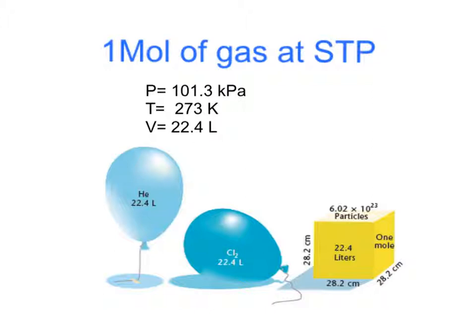At one mole of any gas at STP, the pressure is equal to 101.3 kilopascals, the temperature is equal to 273 kelvin, and the volume is equal to 22.4 liters.